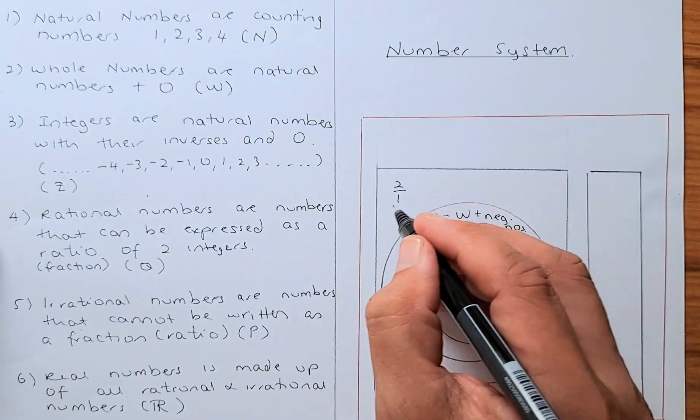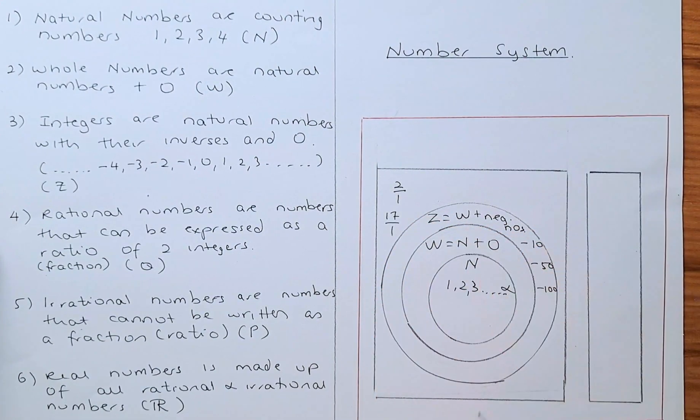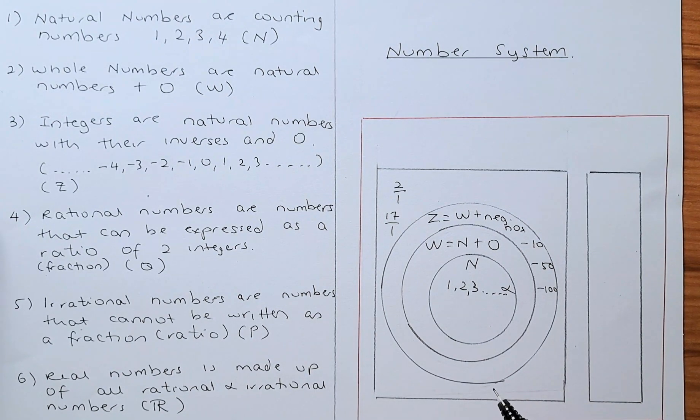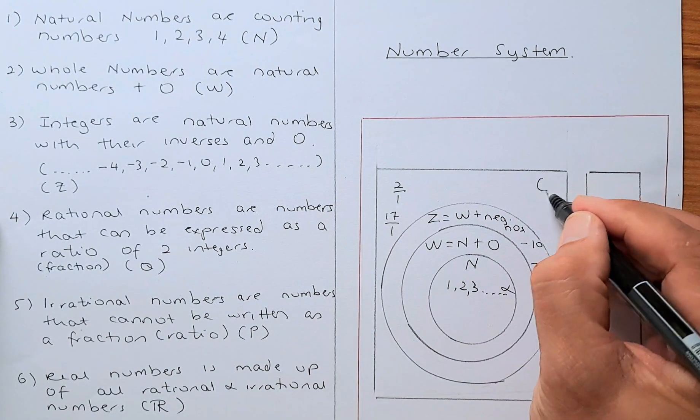17 can be divided by 1. All integers are rational numbers, and rational numbers are represented by the letter Q.